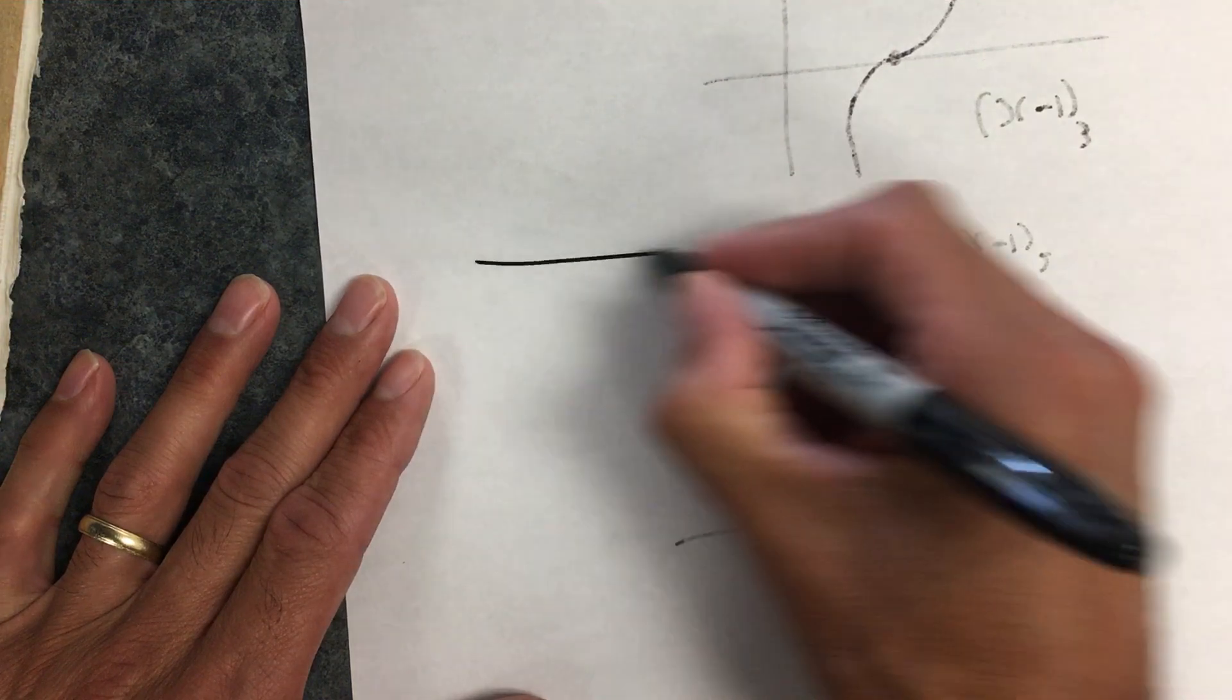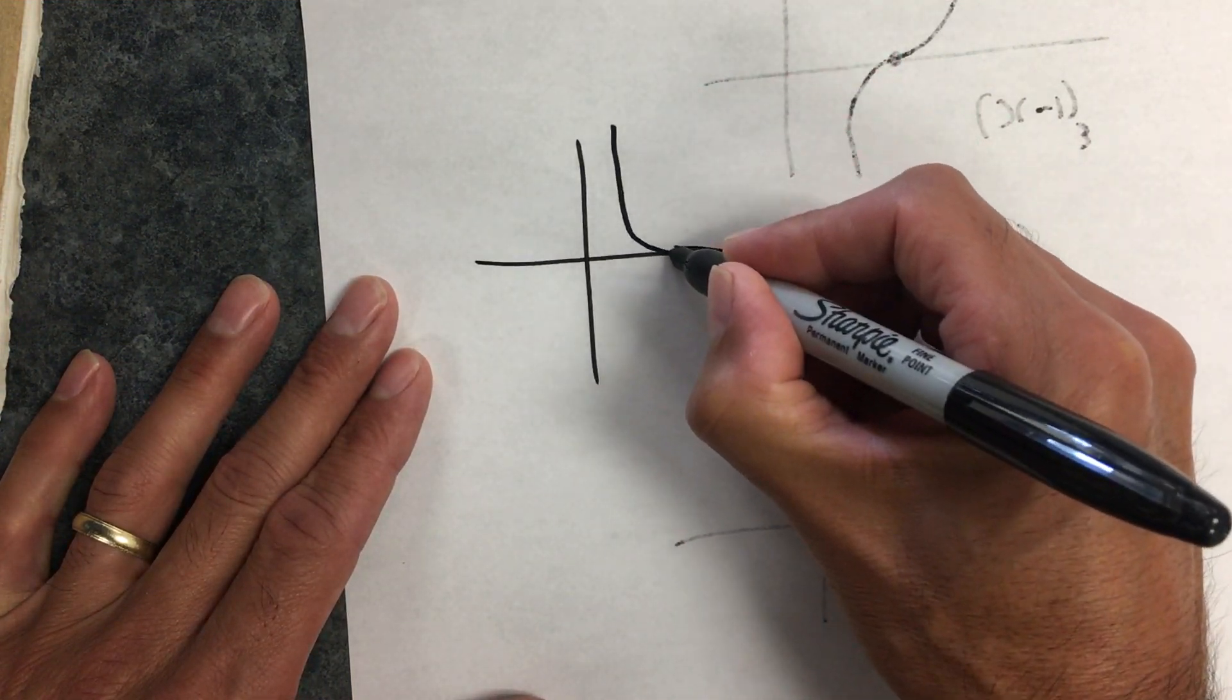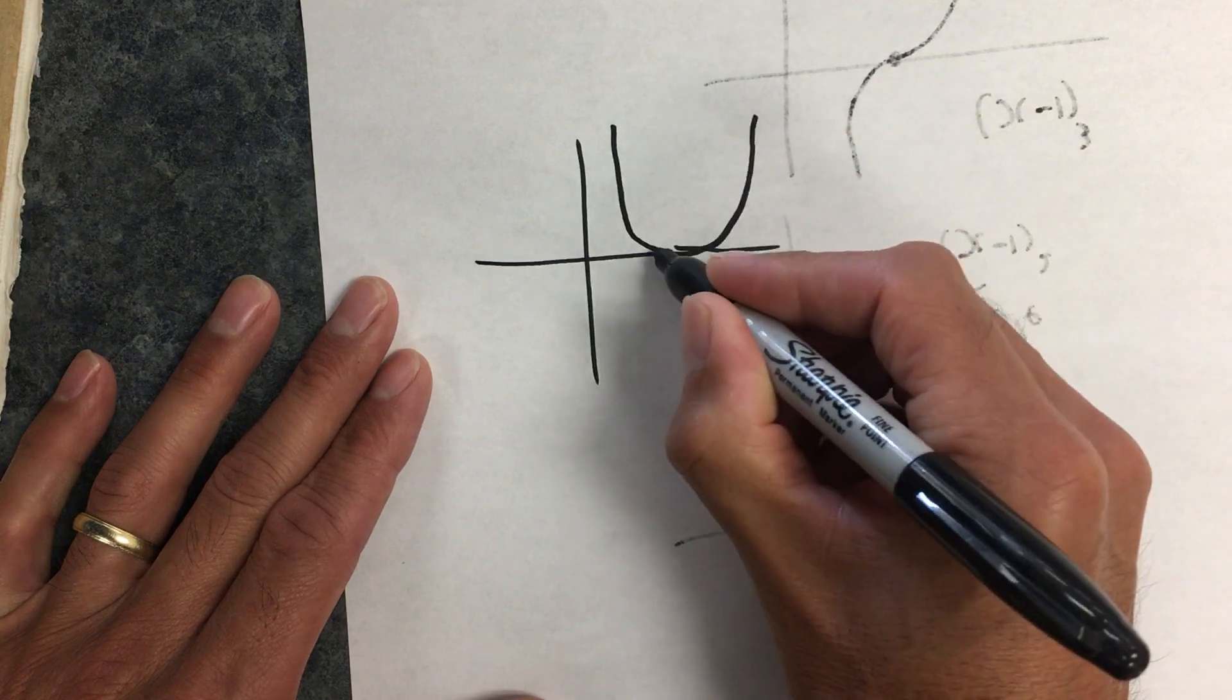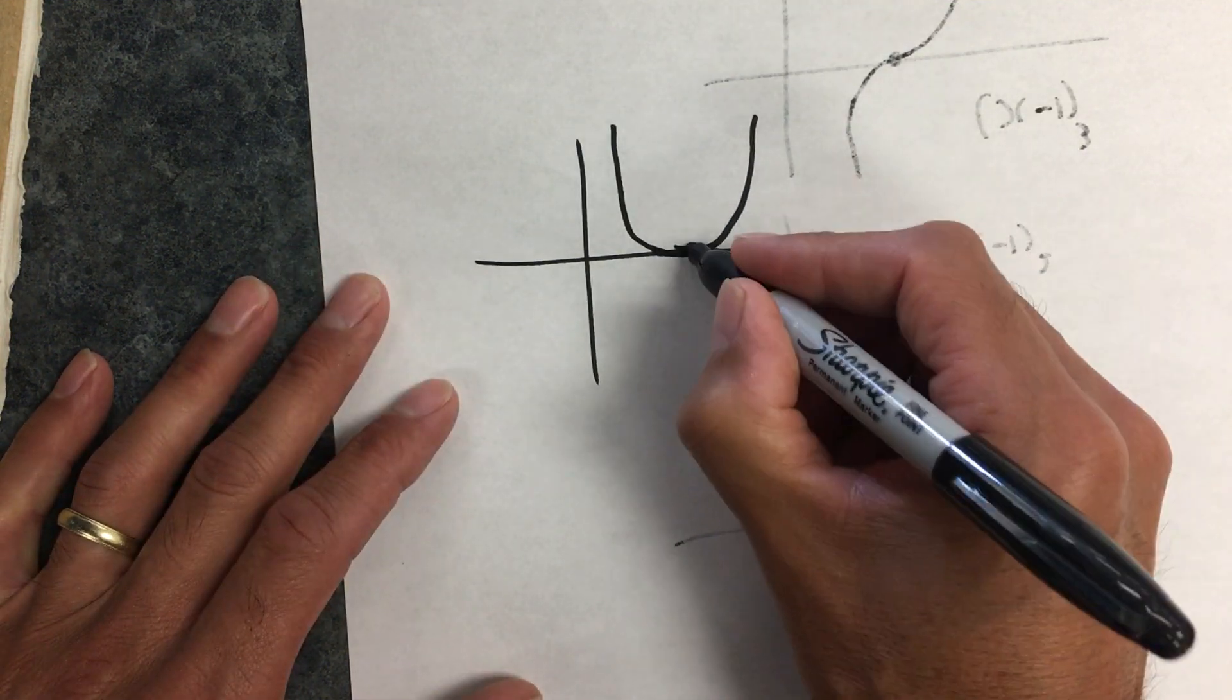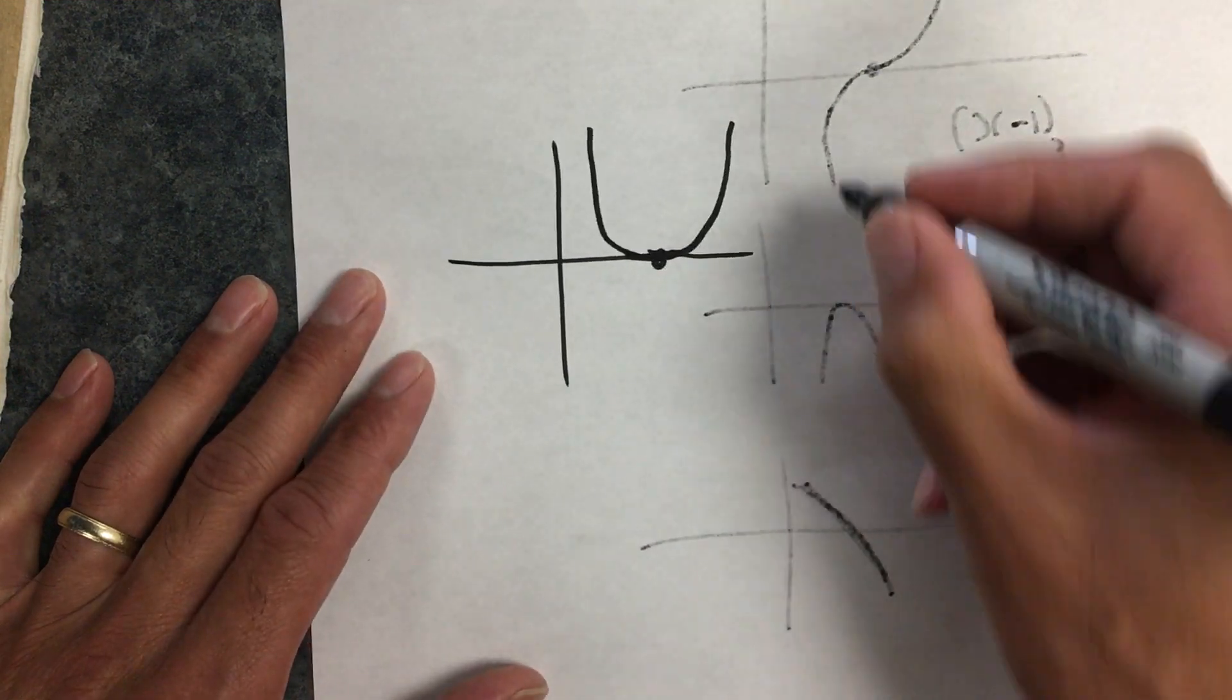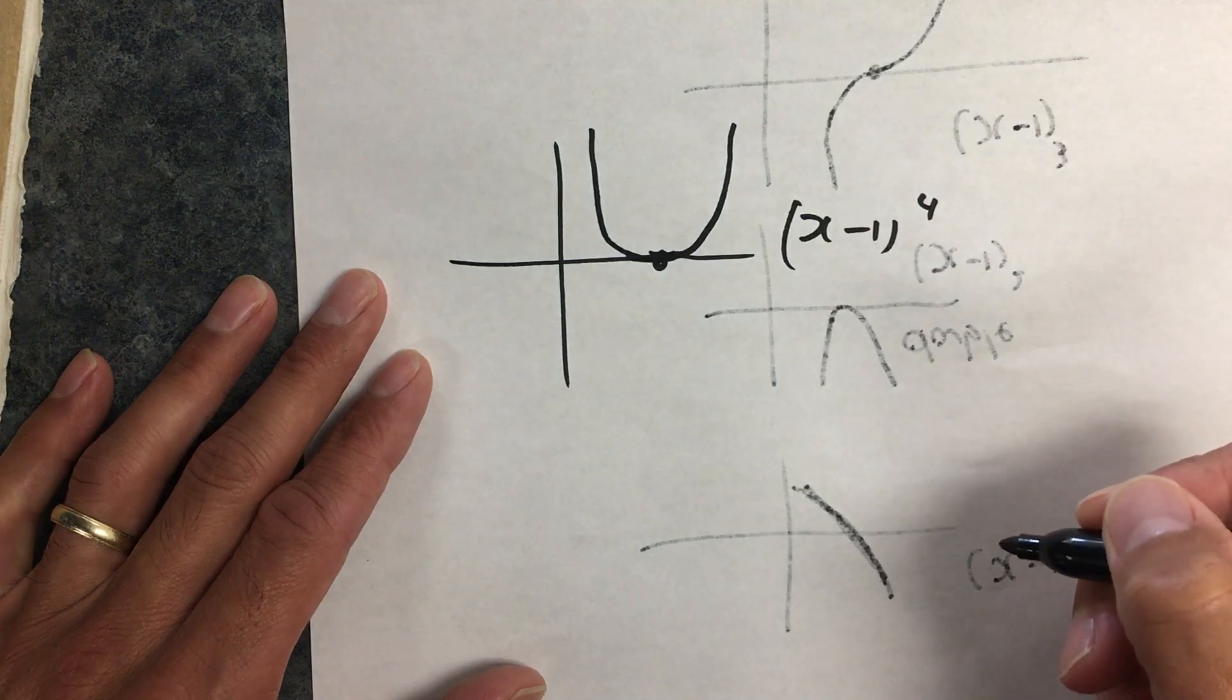And then furthermore, if it's flattened out—so if it bounces but it's flattened out—that flatter bit, it's not completely flat but flatter, that's a quadruple root. So that could be something like (x - 1) to the fourth power.